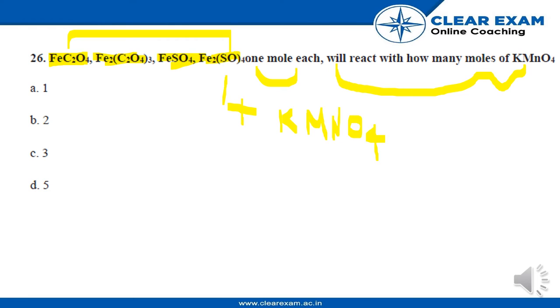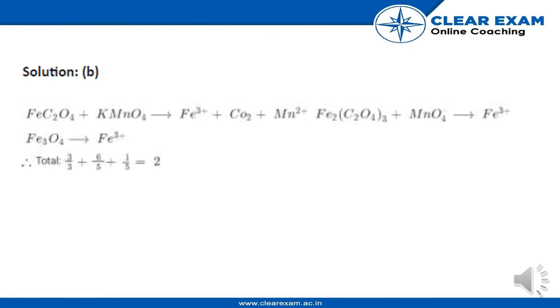So how will we find this? We will simply take this reaction. First, the compound reacting with KMNO4, then we will form Fe3+ ions, CO2, and Mn2+. Then we will combine this with the second compound, that is Fe2(C2O4)3 plus MnO4, and this KMNO4 will be left.